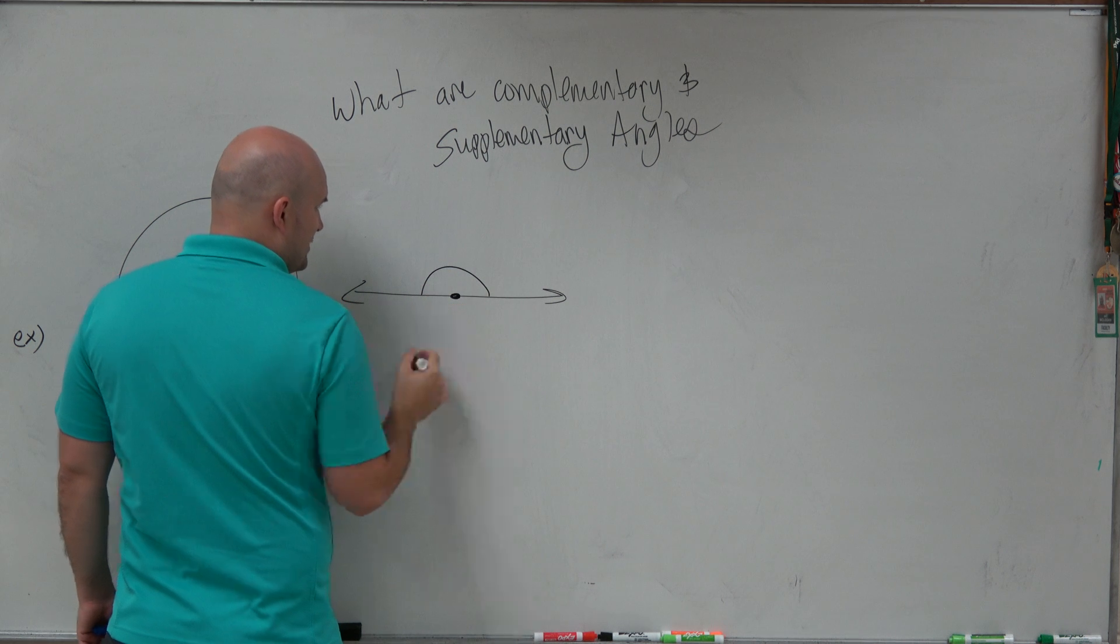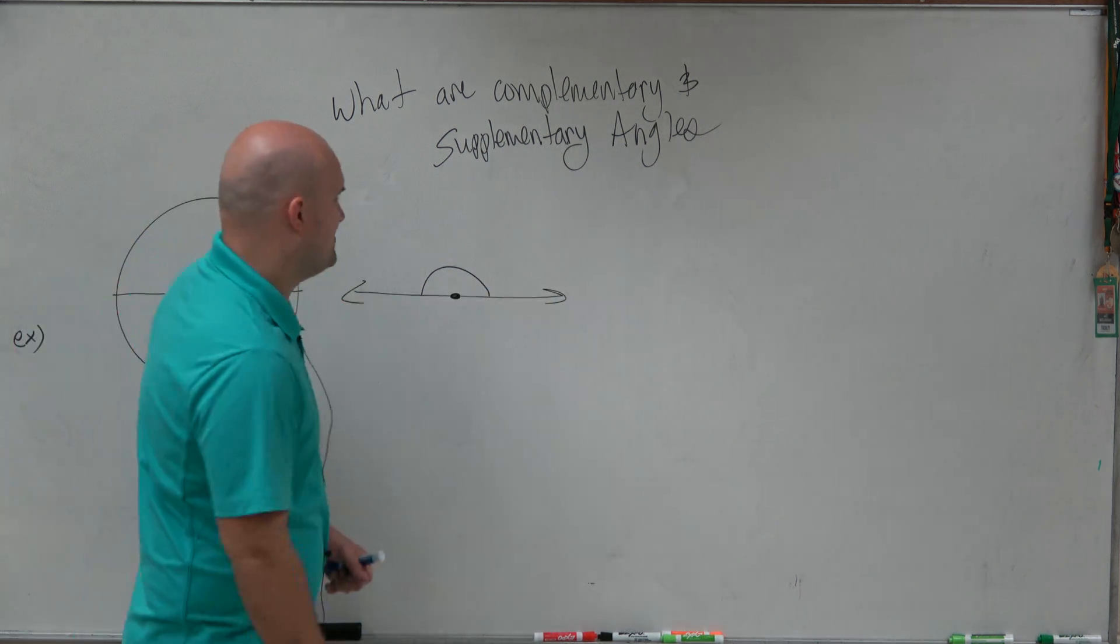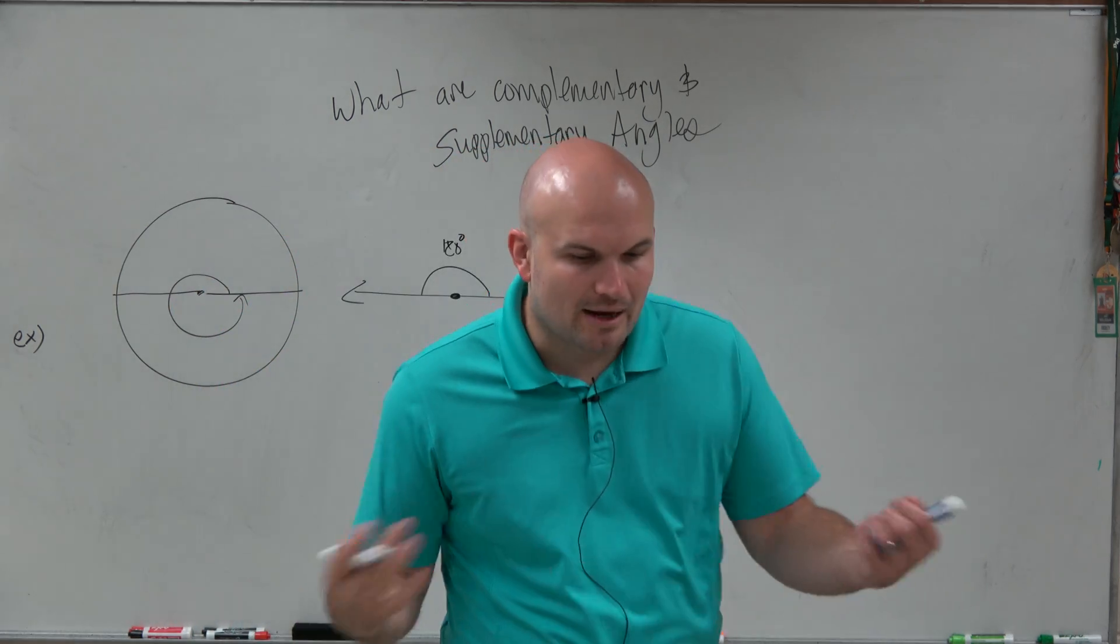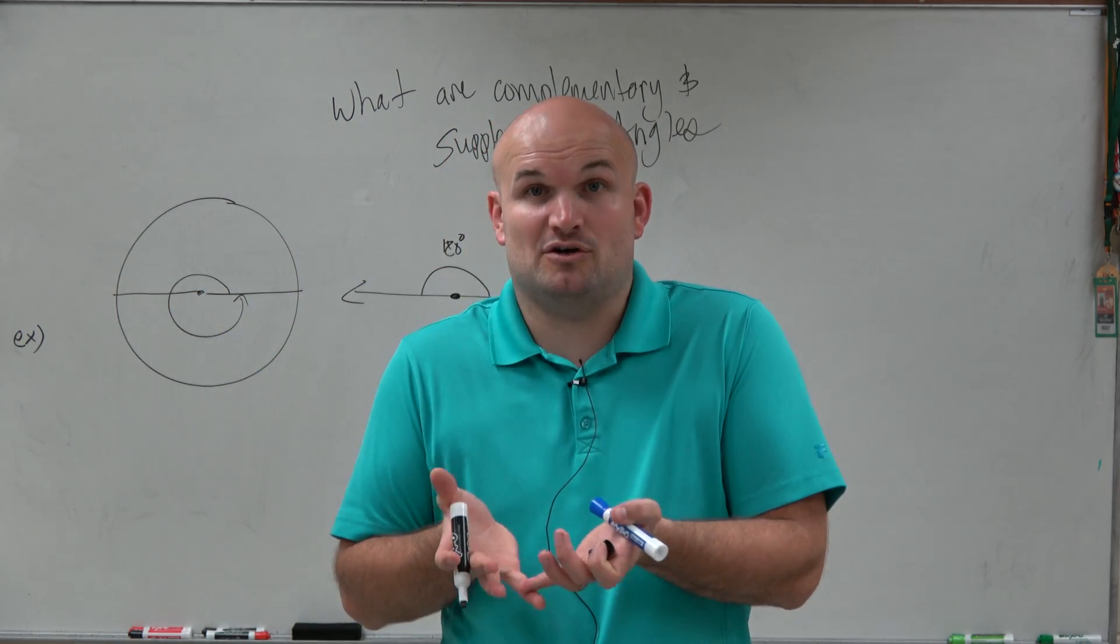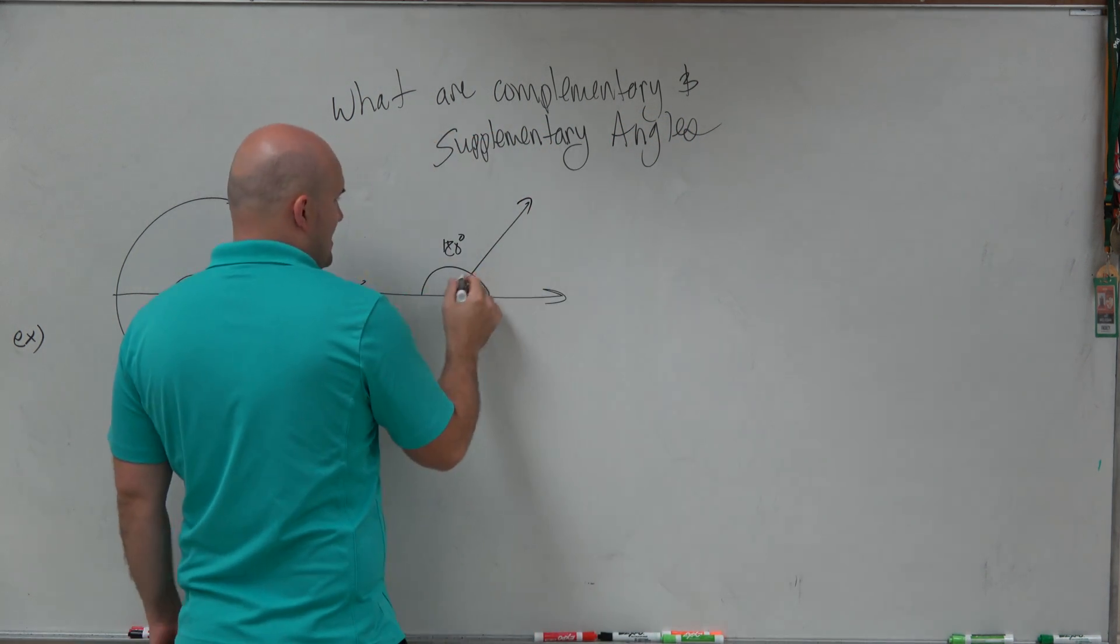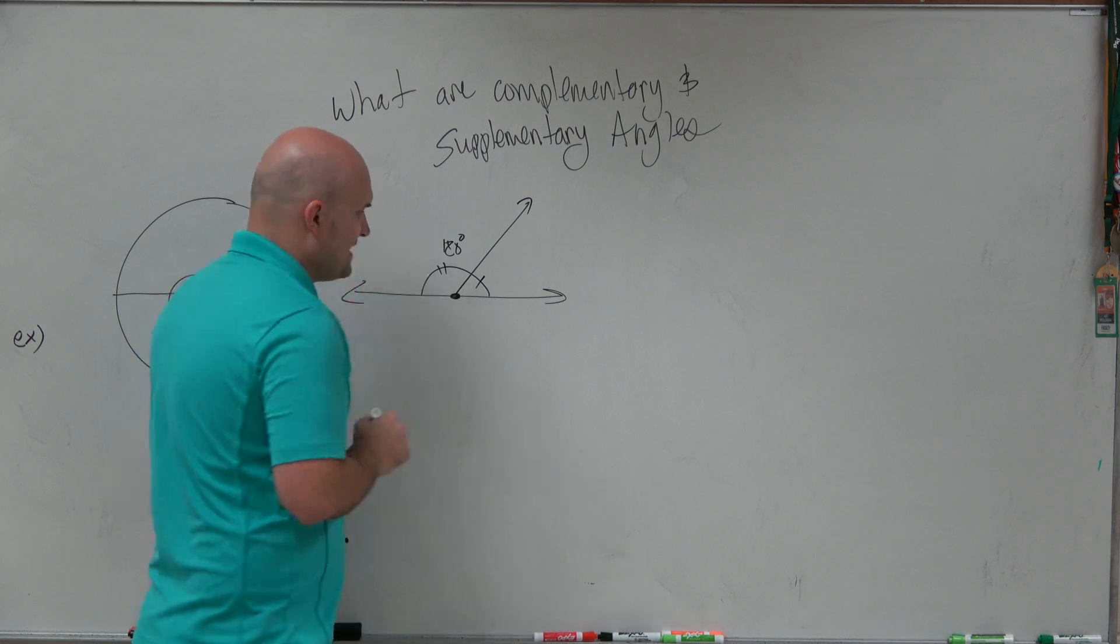Therefore, the measurement from here to here is going to be 180 degrees. Now, if I have an angle that I could break up, let's break this up into two angles. Now I have this angle and this angle.